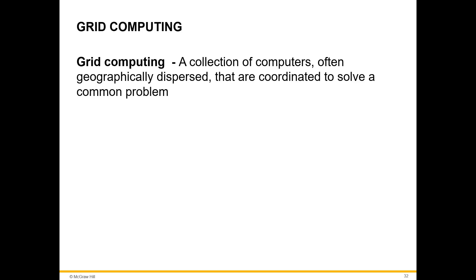Grid computing is a collection of computers, often geographically dispersed, that are coordinated to solve a common problem. With grid computing, a problem is broken into small pieces and then assigned to machines for faster processing. The machines are connected via a network, and when they've finished working on their assigned task, they will communicate through communication infrastructure to build the final solution.